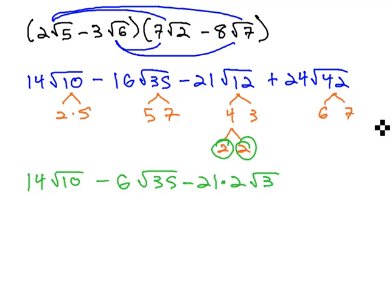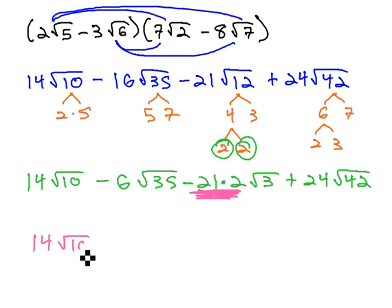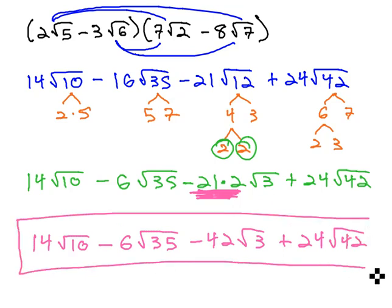And finally, with the 42, 42 is 6 times 7, and 6 is 2 times 3. Again, in this one there's no reducing, so we'll just say plus 24 root 42. Finish out the problem by multiplying the only coefficient we can to get our final answer. Here, 14 root 10, minus 6 root 35, minus 42 root 3, plus 24 root 42. No like terms. This is our final solution.